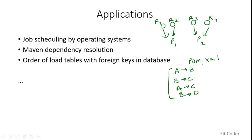A third example is in databases. The foreign key concept requires that a primary key of one table be used in another table. When building such a database, dependent tables must be built only after the main tables are built, and topological sort is used to identify this order. In Spring, bean creation order is also determined using topological sort. Wherever you need to schedule jobs or find a correct execution order, topological sort is applicable.